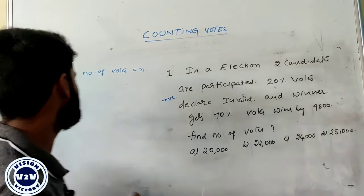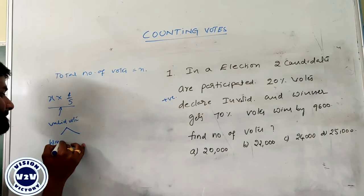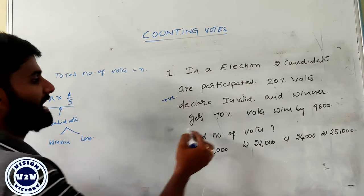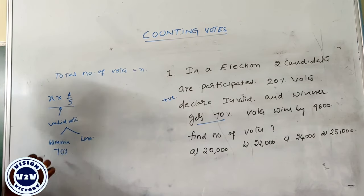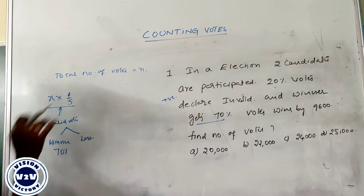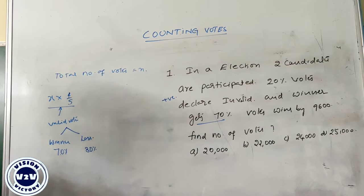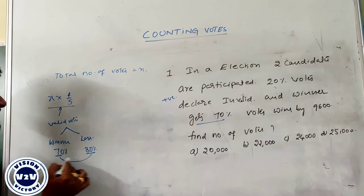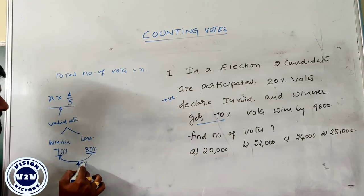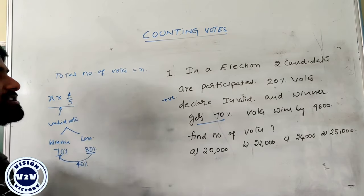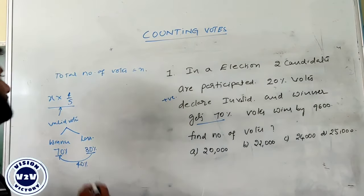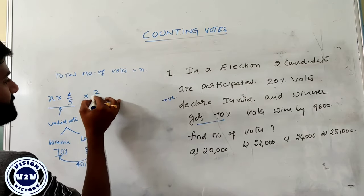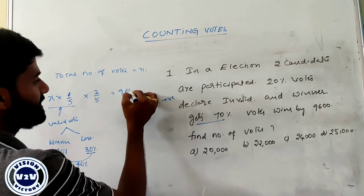These valid votes are distributed between winner and loser. Winner gets 70 percentage of votes, so definitely loser gets 30 percentage. Winner wins by 40 percentage of votes. These 40 percentage of votes exactly equal to 9600, so this fraction multiplied by 40 percentage gives 2 by 5 times x equals 9600.